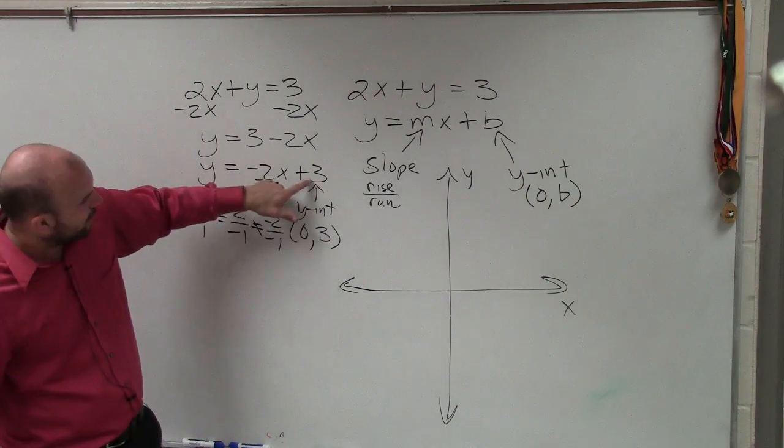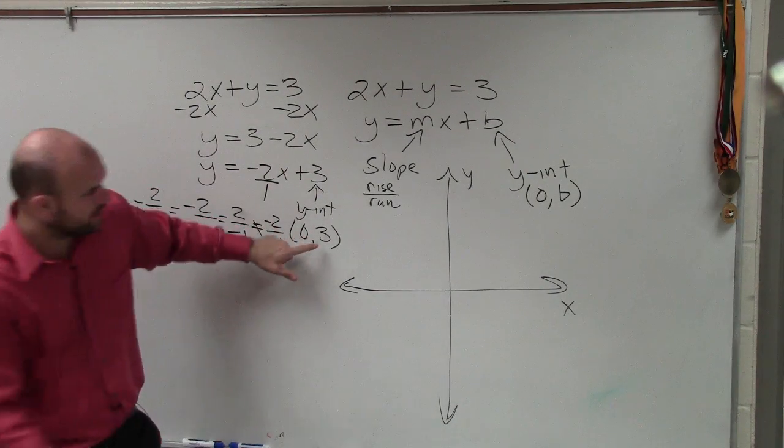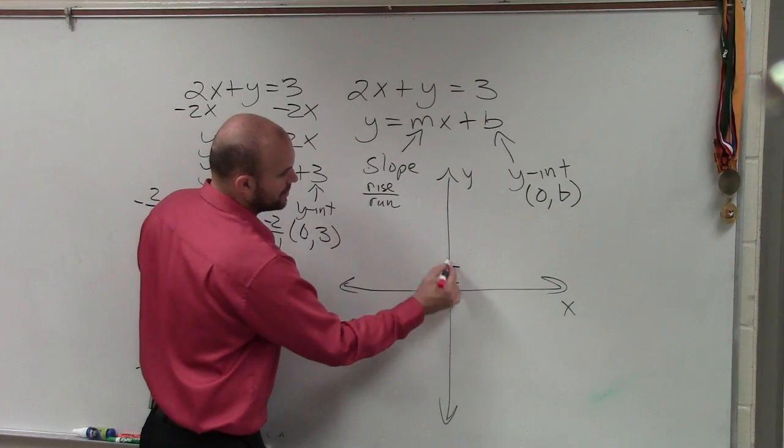So how do we graph this? Again, the y-intercept is a point, 0, 3. So you don't go left or right. You go up 3. 1, 2, 3.